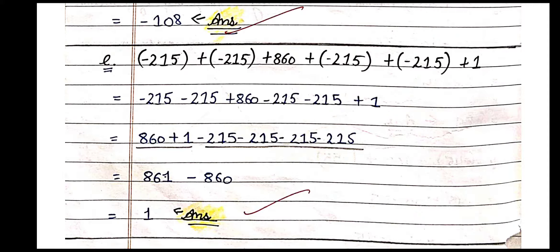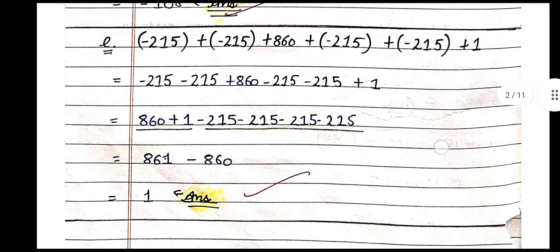Why is the answer 1? Because 861 is the positive number, so 1 is positive. You can see all the solutions here. Now Worksheet 5, sum number 3.